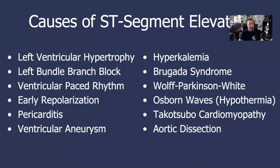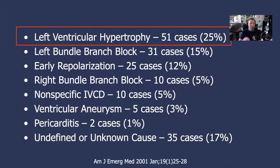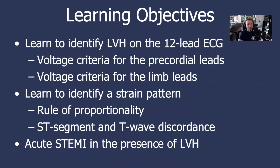Left ventricular hypertrophy is an important cause of ST segment elevation on the 12-lead ECG. In fact, in one series by Dr. William Brady and his colleagues at the University of Virginia, it was the most common cause of ST segment elevation amongst chest pain patients — more common than acute myocardial infarction. A full 25% of patients presenting to the emergency department with chest discomfort and ST segment elevation had LVH with a so-called strain pattern as the cause. This is obviously a very important STEMI mimic that we need to be aware of.